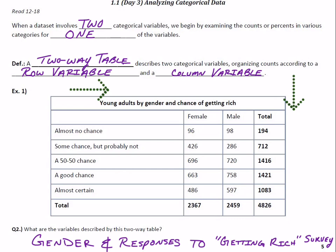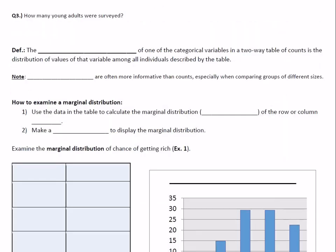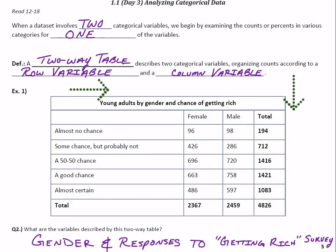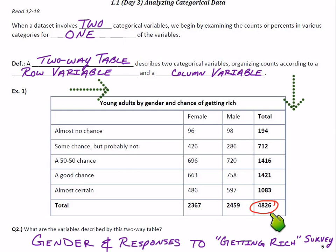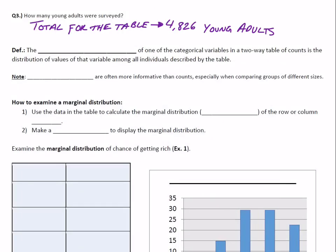How many young adults were surveyed? Young adults would include everyone actually in the survey. These are the total responses in each row — total number of females and total number of males. So the table total, the total number of people altogether, would be 4826. That's the total number of people included in the survey, and those are the young adults referenced.